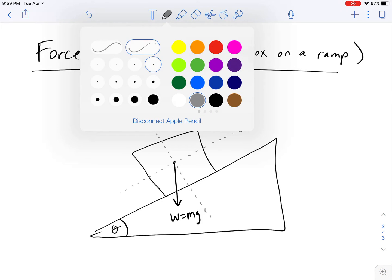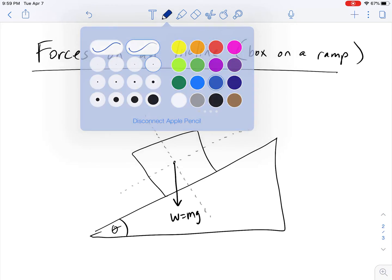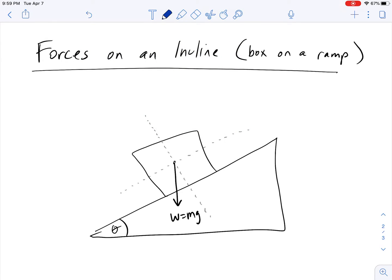Because if you've learned, anytime you have an angled vector, you need to break it into its x and y components. And what happens here is that whatever angle your ramp is at, it just so happens that this angle right here from the weight force and the y axis, these end up being the exact same angles.